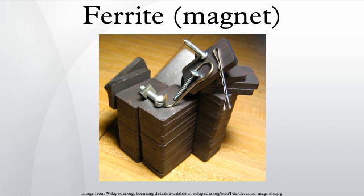Ferrites used in transformer or electromagnetic cores contain nickel, zinc, and/or manganese compounds. They have a low coercivity and are called soft ferrites. The low coercivity means the material's magnetization can easily reverse direction without dissipating much energy, while the material's high resistivity prevents eddy currents in the core. Because of their comparatively low losses at high frequencies, they are extensively used in the cores of RF transformers and inductors in applications such as switched-mode power supplies and loopstick antennas used in AM radios.